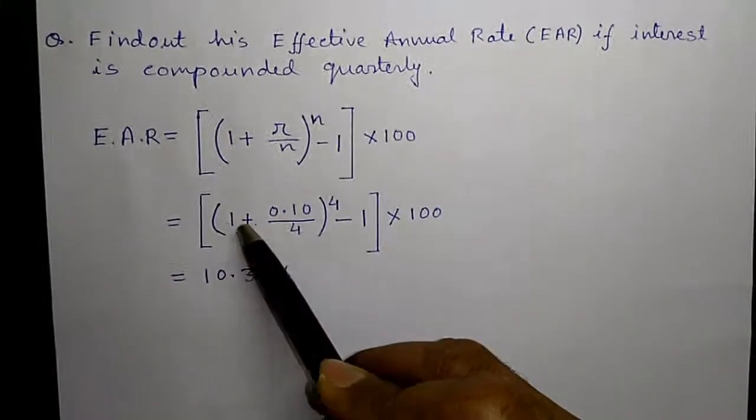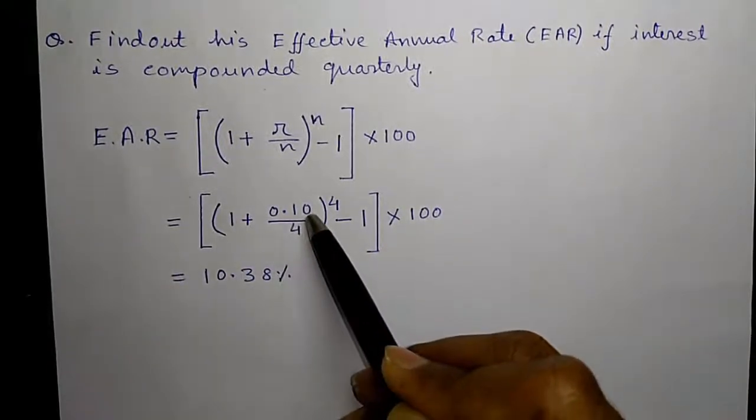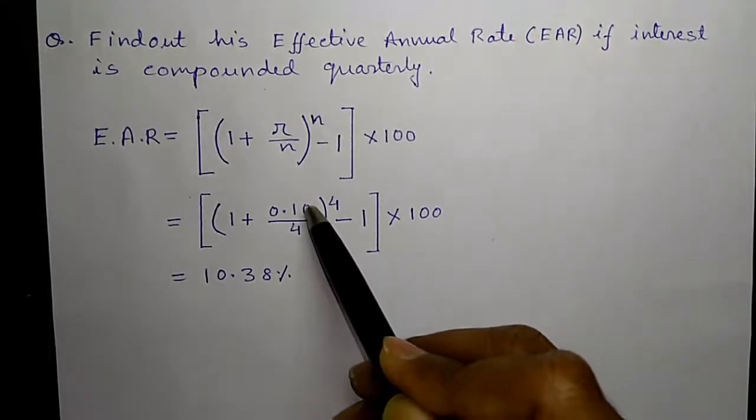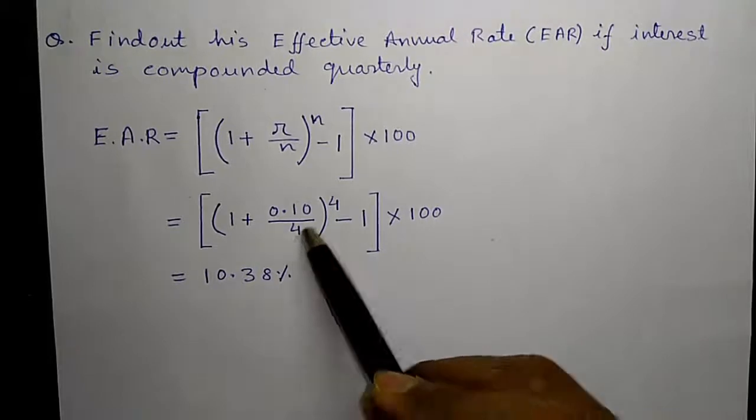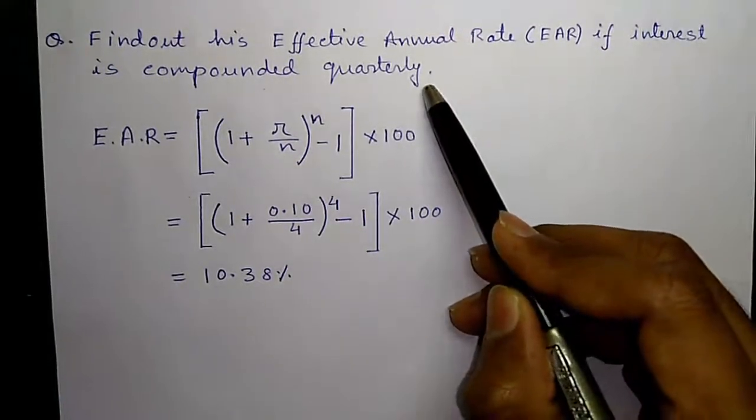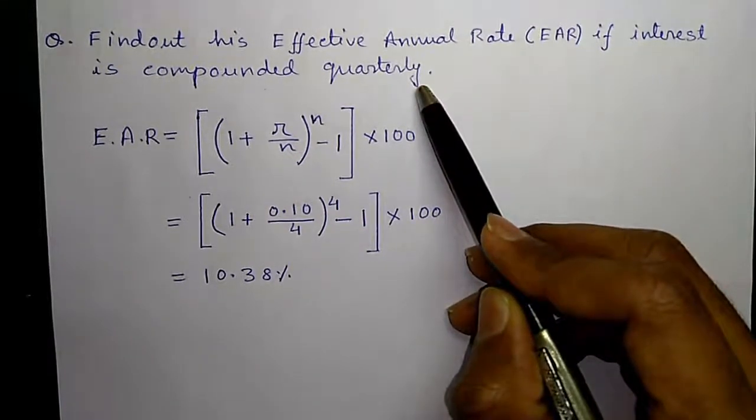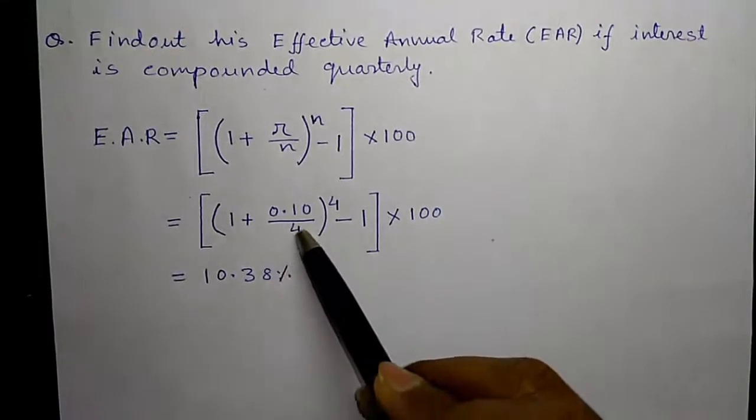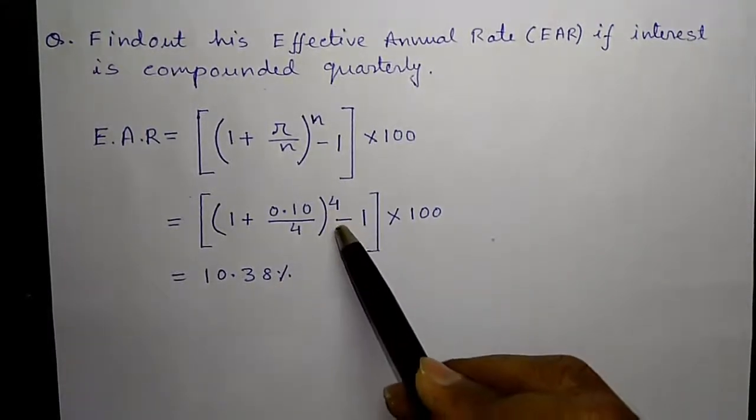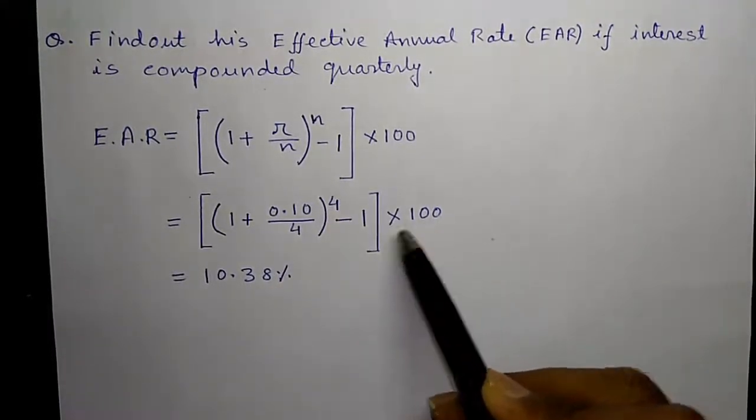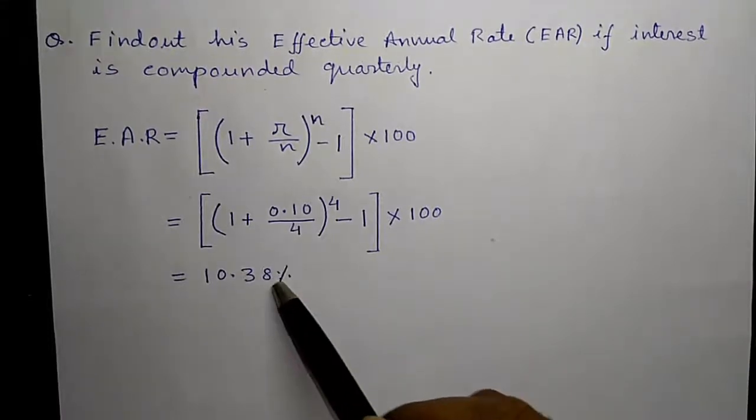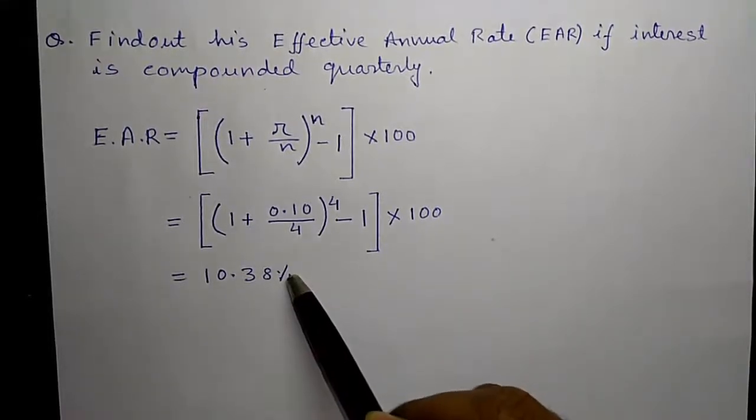Let's put the values. 1 plus R we know is 10% divided by 100 is 0.10 divided by compounding frequency. It is quarterly compounding, that is compounding 4 times per year. So it is divided by 4 again to the power 4 minus 1 into 100 equals to 10.38% per annum.